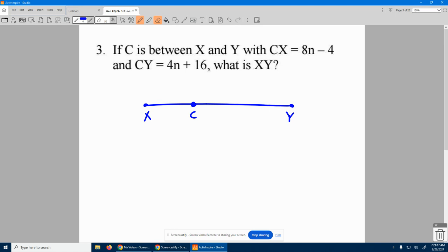It says C to X is worth 8N minus 4. C to Y is worth 4N plus 16. What is XY? Okay.